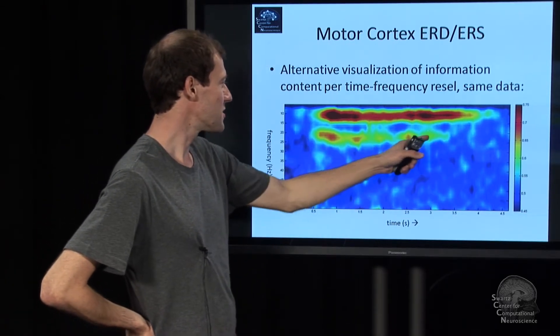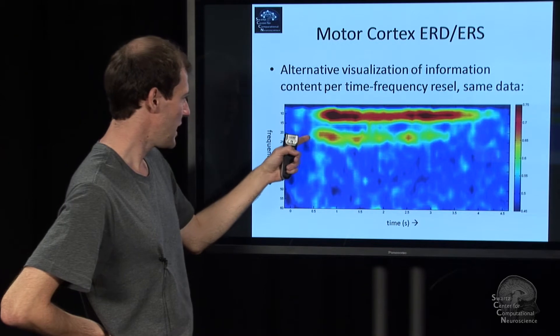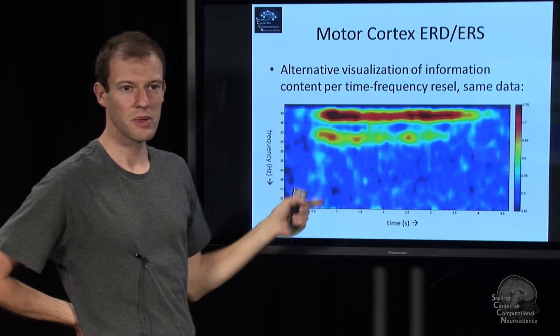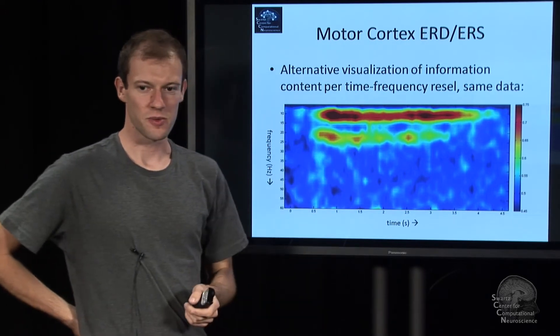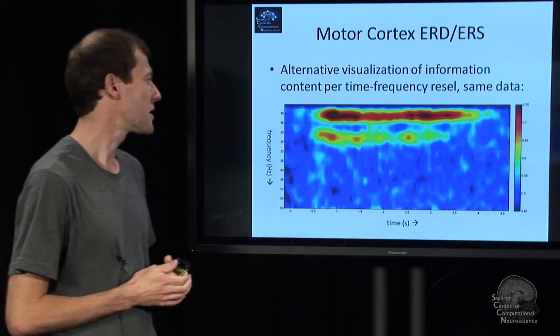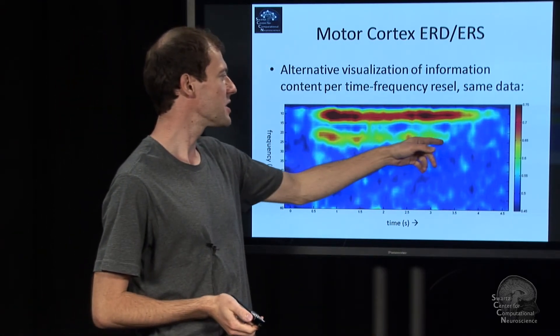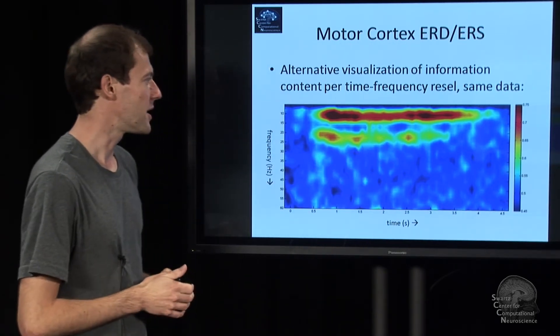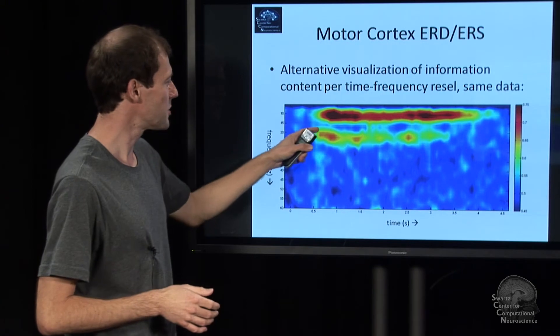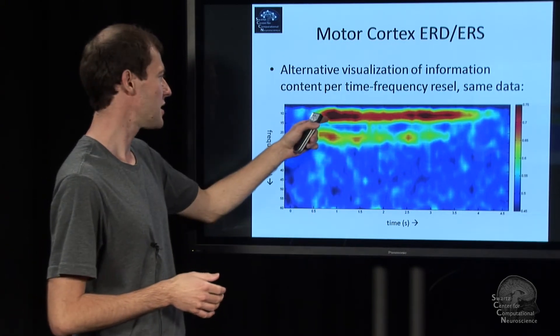There's also something else here, which is in a higher frequency band, around 20 beta frequency, which is also informative, though not quite as informative. In some subjects we see that the beta rhythm changes frequency a little bit, but that's not universal. Some people don't have this at all. Some people just have the 10 hertz.